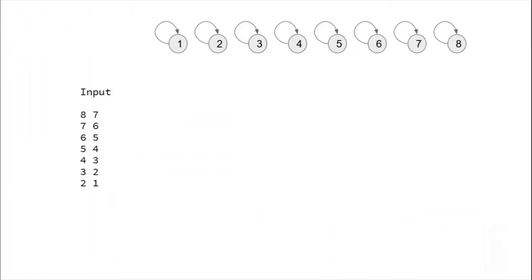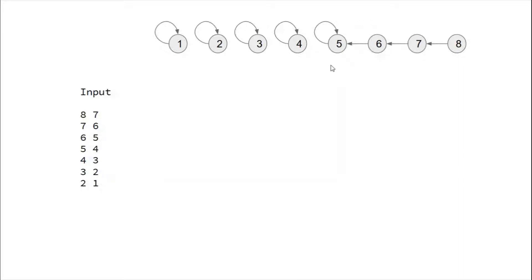Let's see what problem is being tackled by path compression. Suppose we have 8 nodes and initially no one points to any other node, making all of them separate sets. The first input is 8-7, merging nodes 8 and 7. Then 7-6, then 6-5, and so on — we keep merging all the elements. After all of this, what we obtain is a linear tree.